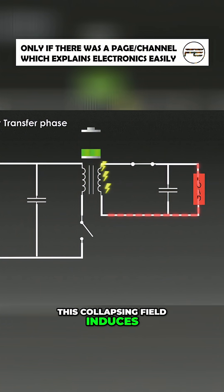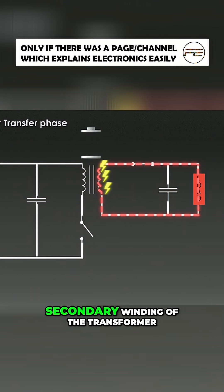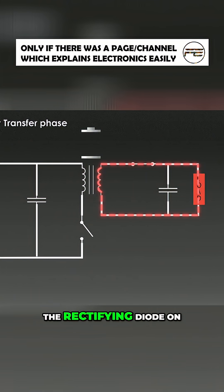This collapsing field induces a voltage in the secondary winding of the transformer. The rectifying diode on the secondary side becomes forward biased, which allows energy to flow into the output capacitor and to the load.